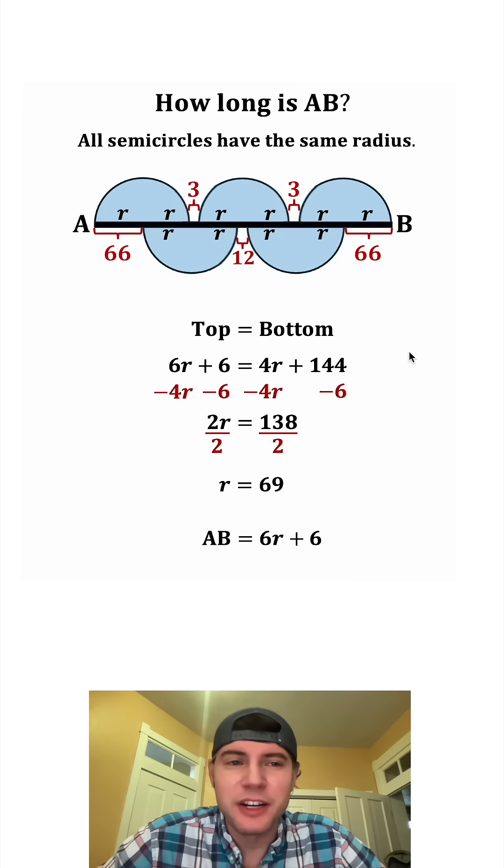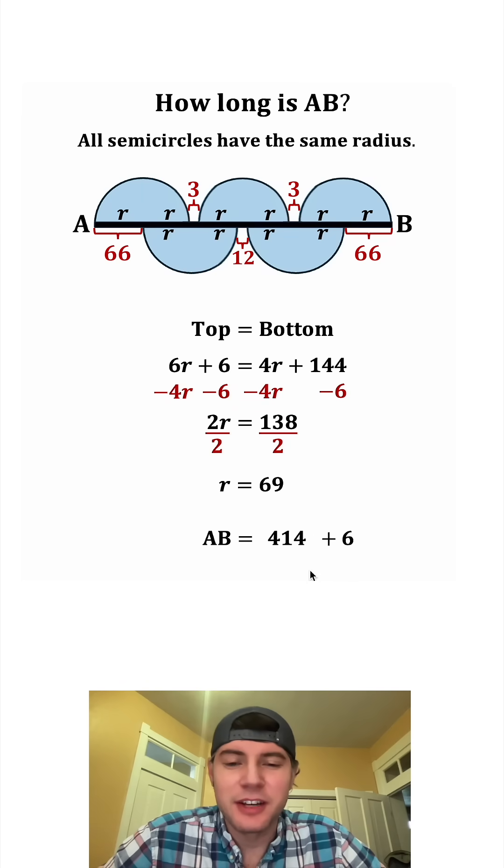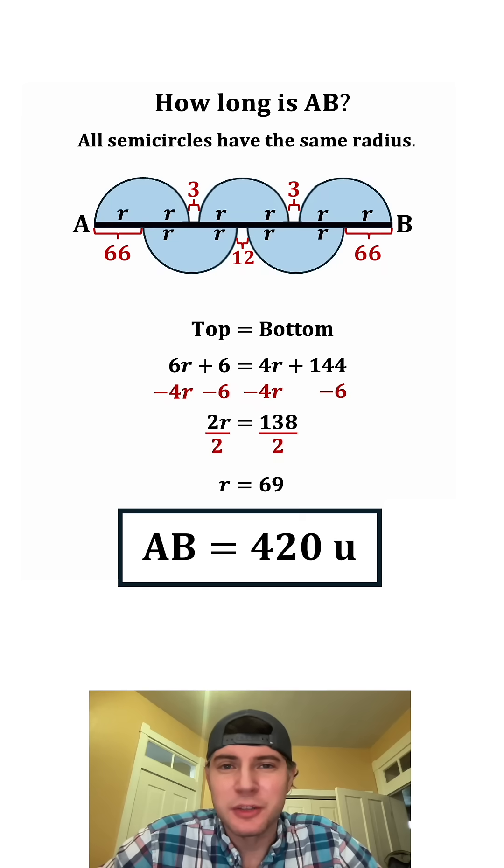That means that each of these radii are equal to 69. And now we're ready to solve for AB. In the place of R, we can plug in 69. Six times 69 is equal to 414. And 414 plus 6 is 420. That is the answer to our question. Let's put a box around it. The length of AB in this diagram is equal to 420. How exciting.